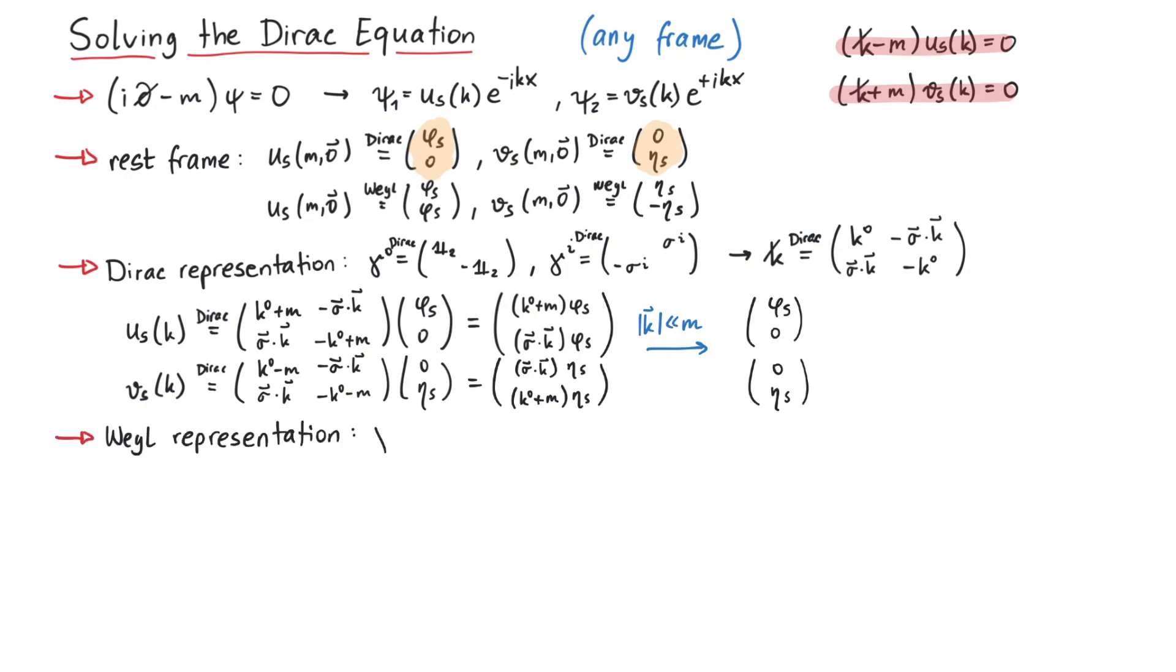Next, we use the Weyl representation of the gamma matrices. Here, gamma mu can be written in terms of sigma mu and sigma bar mu, which are defined like this. And the rest frame Weyl representation bispinners look like this.